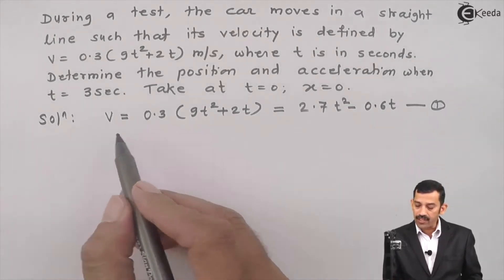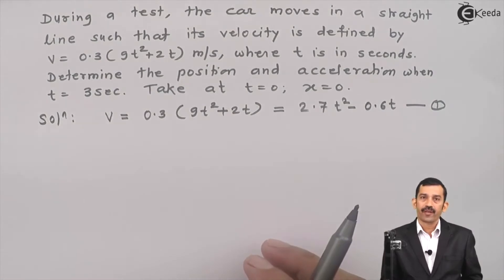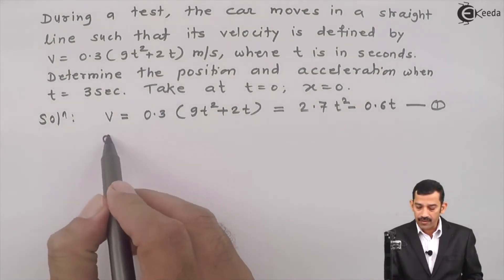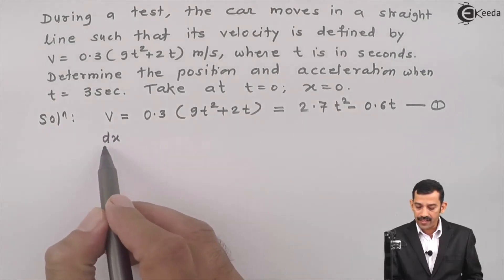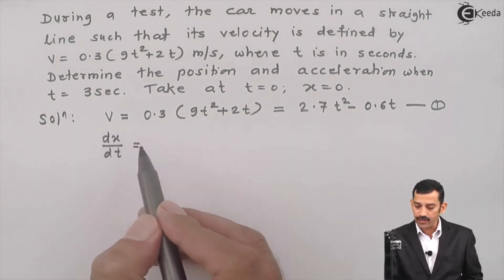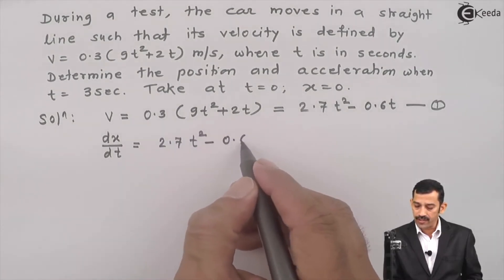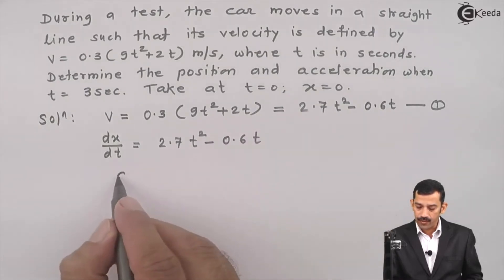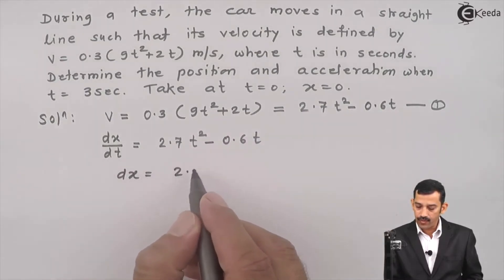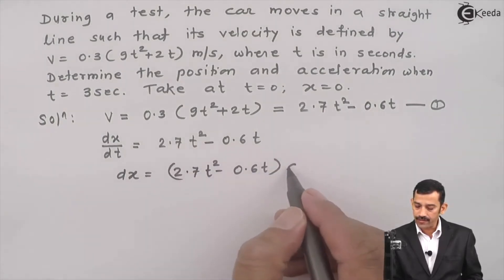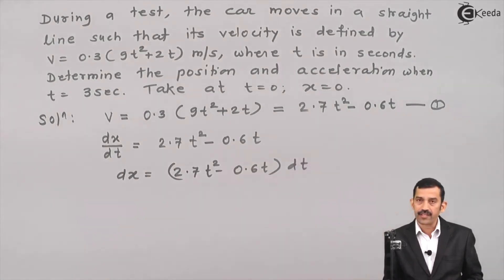Since v is a function of time t, velocity can be written as dx/dt — the rate of change of displacement with respect to time. Substituting, dx/dt = 2.7t² − 0.6t. Therefore, dx = (2.7t² − 0.6t) dt. Integrating this equation will give us the relation between x and t.